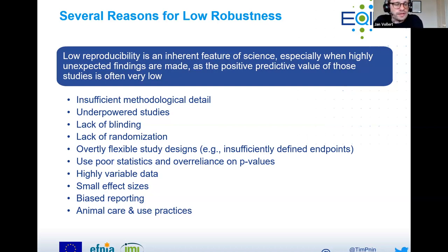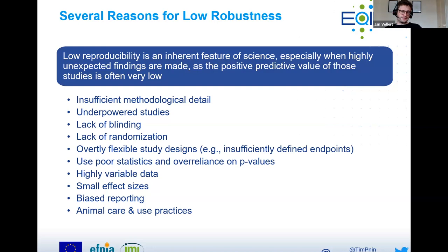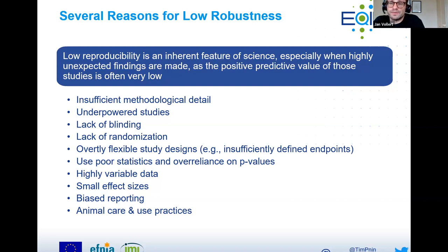We have cognitive biases that push us towards always making sense of what we find, and we cannot easily accept that things are just random scatter — that something which looks exciting might just happen by chance. But there are ways we could increase robustness. Here are some examples that point out the opposite — so if we do the opposite of these, we can improve. Insufficient methodological detail is often published in big journals; the methods are printed only online or in smaller print, or as an appendix at the end.